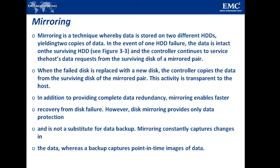Mirroring is a continuous process — as changes are made in one disk, the same data is copied to the other disk. Backup, however, captures only data up to a specific point in time. For example, if a backup is taken at 10 o'clock, any data changed even a second after that time will not be captured in the backup.